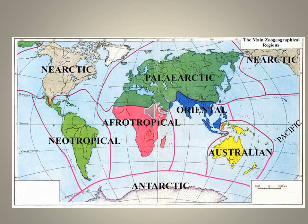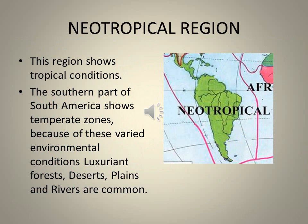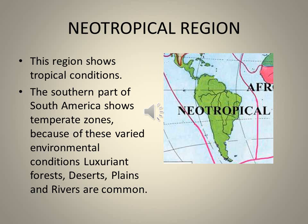The Neotropical realm is also called the South American realm. This region shows tropical conditions as it is near the equator, while the southern part shows temperate zones. Because of these varied environmental conditions, luxuriant forests, deserts, plains, and rivers are common — that is why Brazil contains the Amazon, the largest river by volume. The Neotropical continent is mainly divided into the Chilean, Brazilian, Mexican, and West Indian subregions. The West Indian subregion is also called the Caribbean subregion.